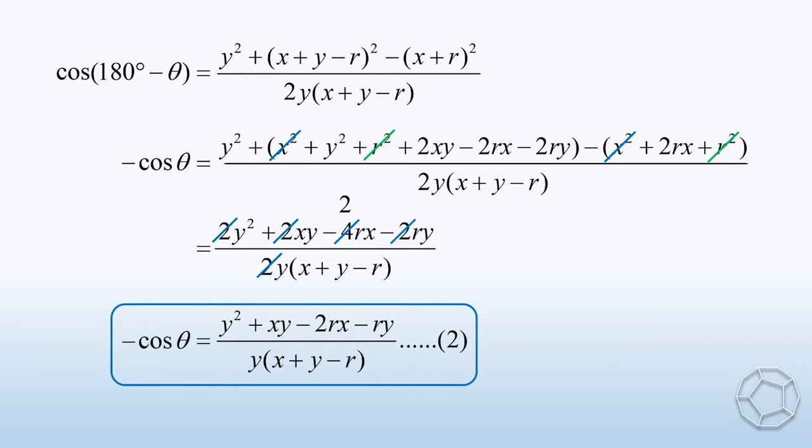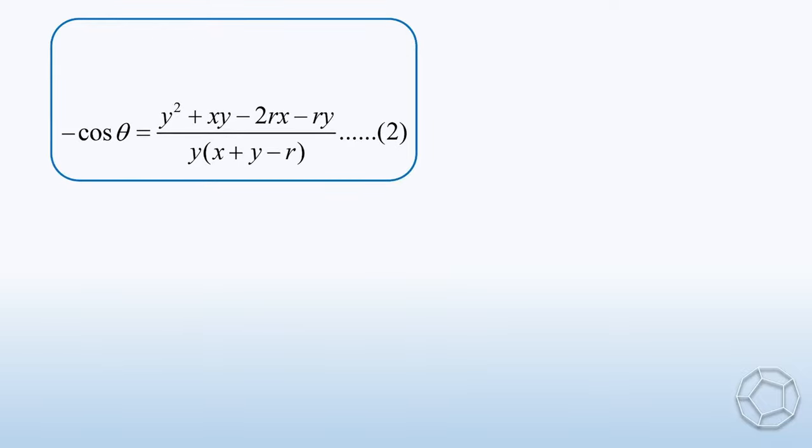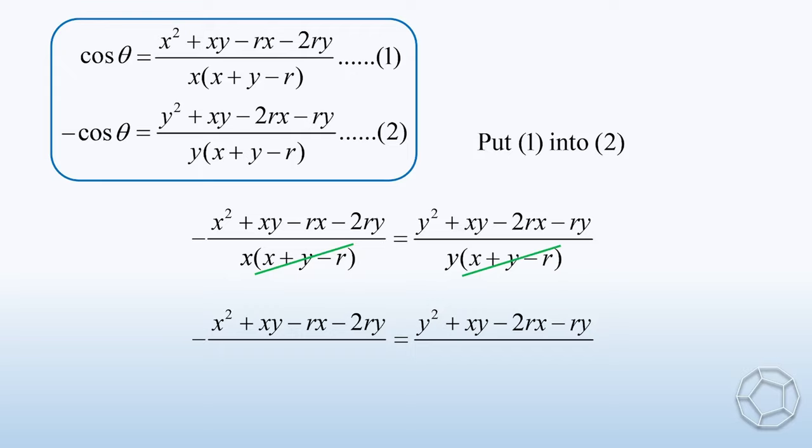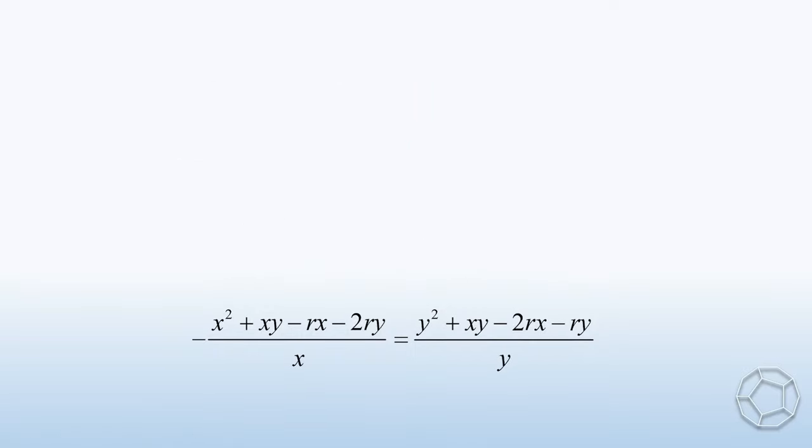Now, we can put the two equations side by side. Clearly, we can substitute them to get rid of the unknown angle theta. Here, the common denominator X + Y - R on both sides can be cancelled out. There's only one single term in denominator. The resulting fractions are much easier to handle. Now, we can separate the fractions on each side.